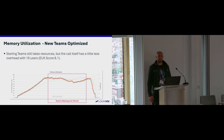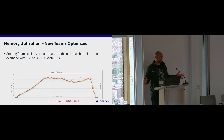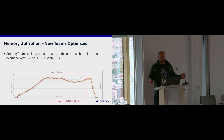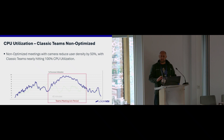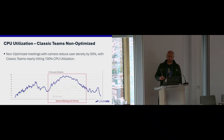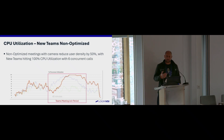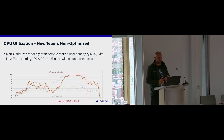Does everyone believe their Teams is optimized 100% of the time? No — because if we don't control the endpoints, we can't guarantee we're actually offloading that traffic. That's a problem we all have because no one purely uses just managed devices. So then we get into a non-optimized state and we see some more interesting numbers. With Teams non-optimized, density is reduced. With six concurrent calls, that's what the CPU usage looks like — and if you're in an environment with unmanaged devices where you can't guarantee offloading, new Teams is actually going to be a little bit worse on your CPU.